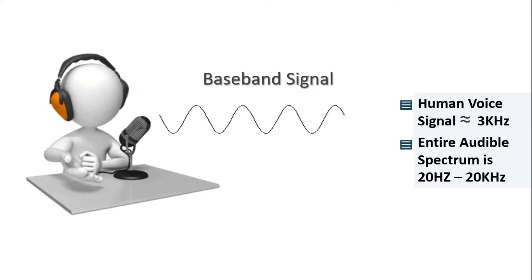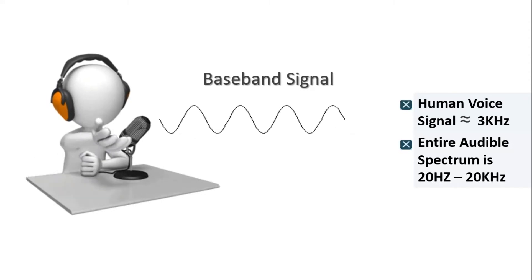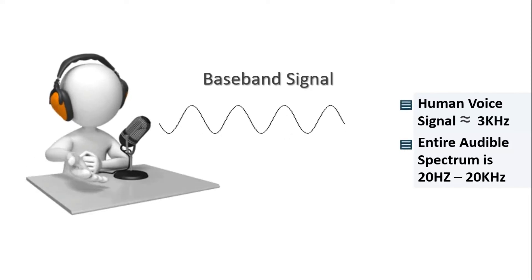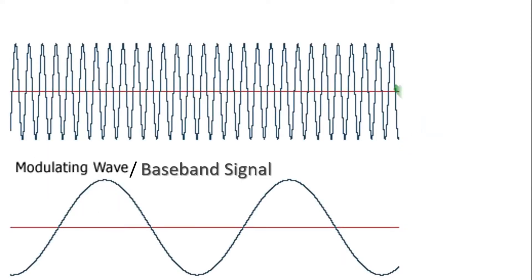As this baseband signal cannot travel directly over a long distance, so we have to introduce a high frequency periodic signal. With the help of this high frequency periodic signal, message can be transmitted over a long distance. This high frequency periodic signal is called carrier signal.